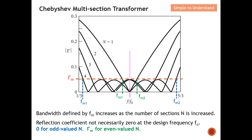Furthermore, if you can tolerate a higher ripple — a higher level of maximum reflection coefficient — you will have an even larger bandwidth. So the bandwidth defined by Γ_m increases as the number of sections N is increased. From the diagram, the bandwidth for N equals one versus N equals four is quite obvious: N equals four has a significantly larger bandwidth.